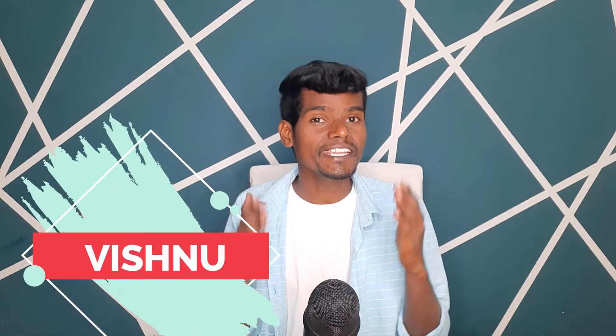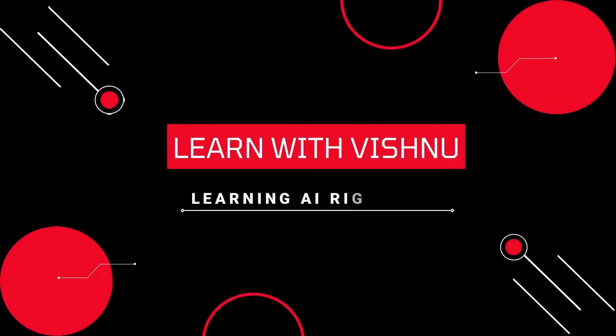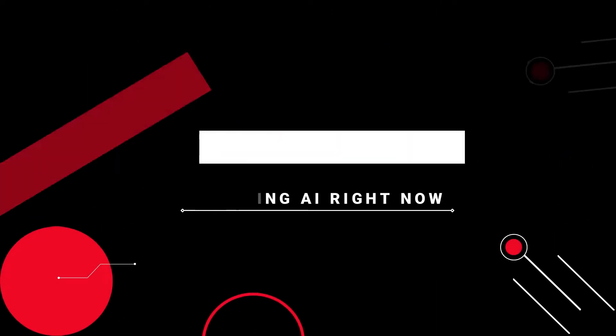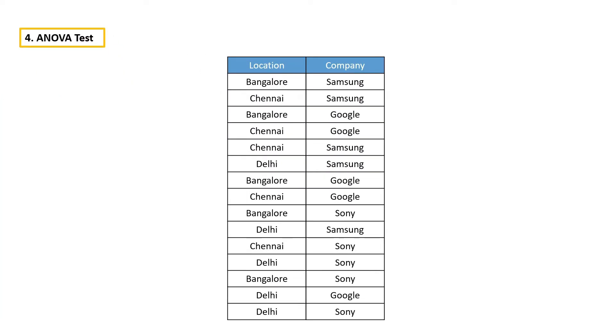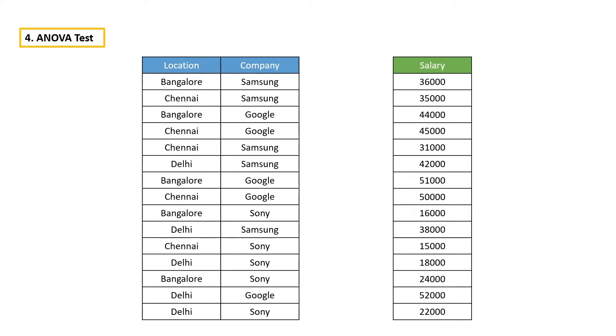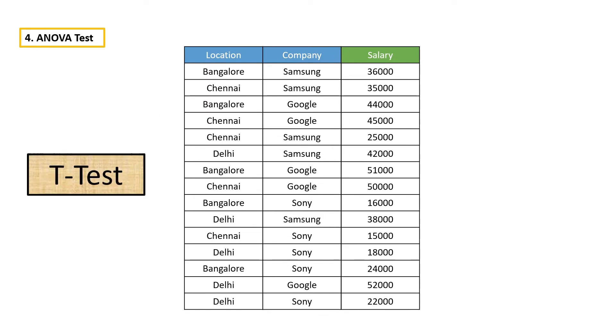Hey everyone, I'm Ishnu, I'm a data scientist. In this video, I'm gonna teach you the beautiful idea behind ANOVA and you will learn how to do feature selection using ANOVA. If the independent variables are categorical and the dependent variable is numeric, then we have to use either t-test or ANOVA.